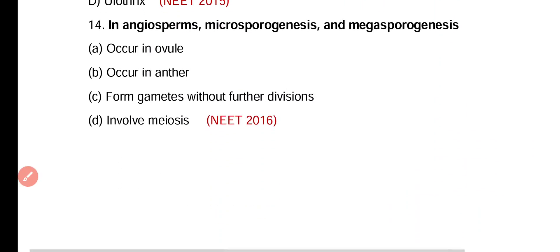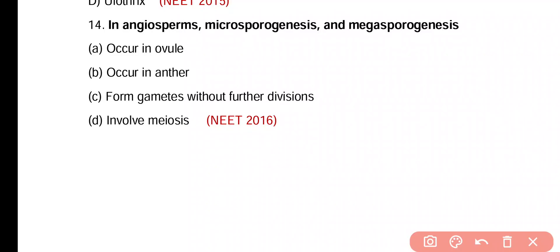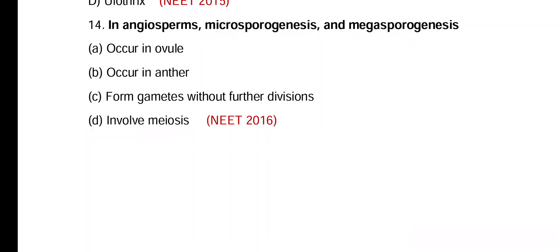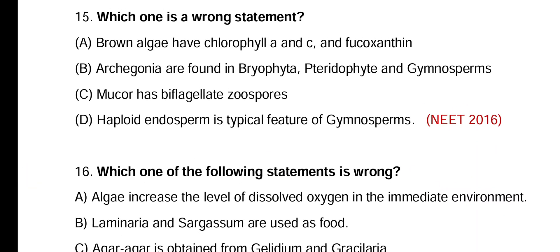Question 14. In angiosperms, microsporogenesis and megasporogenesis occur in anther, involve meiosis, and form gametes without further division. Correct answer is option D — microsporogenesis undergoes meiosis to form microspores and megasporogenesis undergoes meiosis to form 4 megaspores.